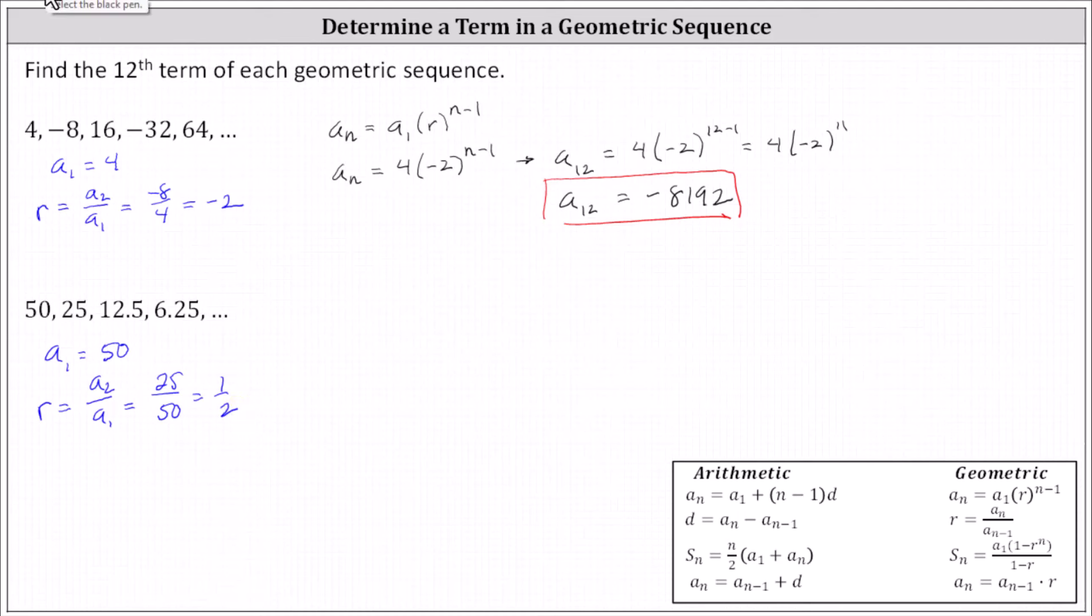This indicates a sub n equals a sub one, which is 50, times r, which is one half, raised to the power of n minus one. Now we can use this formula to determine the twelfth term. A sub 12 is equal to 50 times one half to the power of 12 minus one, which is 50 times one half to the power of 11.